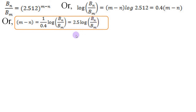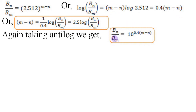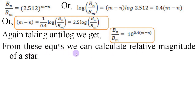This is the relation between brightness and apparent magnitude of a star. If we take the antilog of this equation, using base 10, we get bₙ/bₘ = 10^(0.4 × (m − n)). From these equations we can calculate relative magnitudes of a star, which will be shown in future problems.